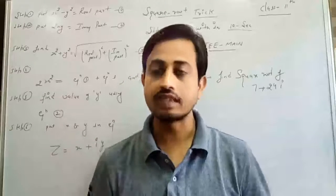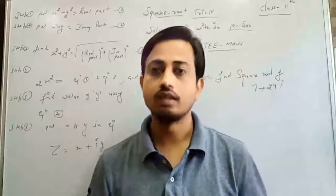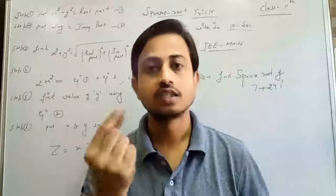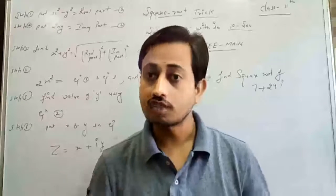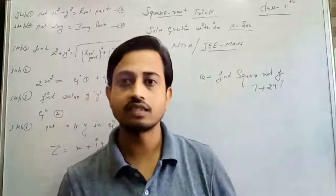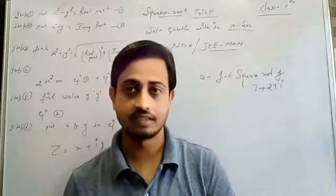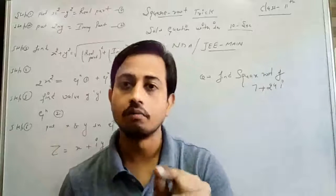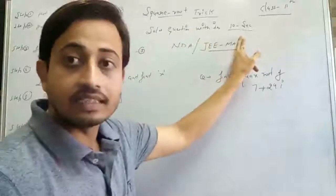So what's the short trick and what's the logic behind it? We will discuss one by one. In this lecture we will take short tricks to find out the square root of any complex number within 10 seconds. It's very easy. Firstly we have to keep some points in mind. If you learn them and practice, you can solve such questions within 10 seconds or even faster.